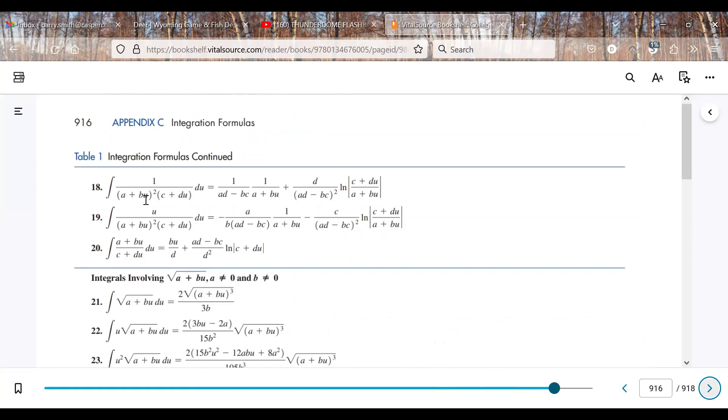Again, our Xs are Us, and this was 5 plus 3X, the quantity squared, times 1 plus X, and then it was DX.